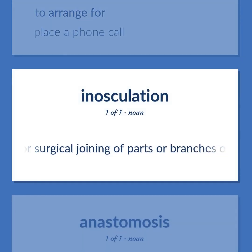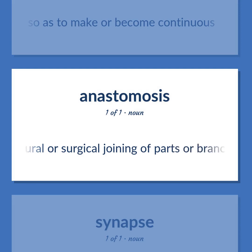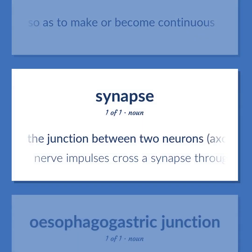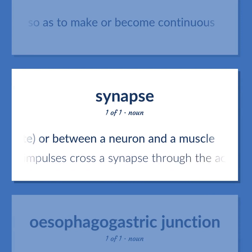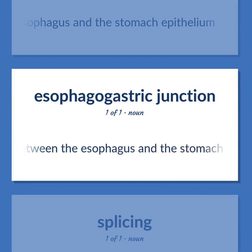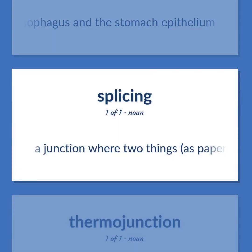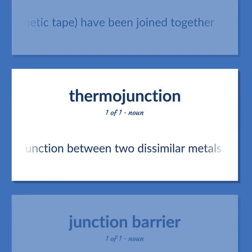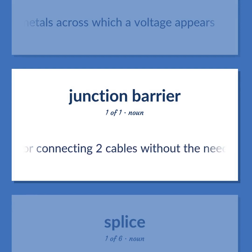Anastomosis/Synapse: A natural or surgical joining of parts or branches of tubular structure so as to make or become continuous. The junction between two neurons — axon to dendrite — or between a neuron and a muscle; nerve impulses cross a synapse through the action of neurotransmitters. The junction between the esophagus and the stomach epithelium. A junction where two things, as paper or film or magnetic tape, have been joined together. A junction between two dissimilar metals across which a voltage appears. A junction unit for connecting two cables without the need for plugs.